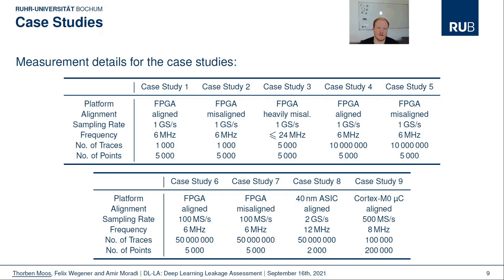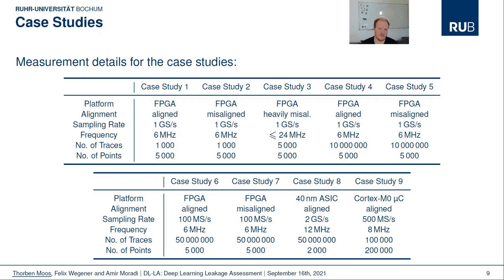We have tested our new leakage assessment strategy in a total of nine different case studies using side-channel data from different implementations and platforms. We always compare DLLA to the T-test and the G-square test in order to judge the quality of the deep learning-based leakage detection. The first seven case studies are all based on hardware implementations measured on an FPGA. For some of them the traces are aligned, for others they are misaligned. Some circuits are protected by a masking countermeasure, some others are not. Some trace sets contain univariate leakage and some others include only multivariate leakage. In addition, there is also one case study based on measurements from a custom ASIC and another one where a software implementation is executed on an ARM Cortex-M0 microcontroller.